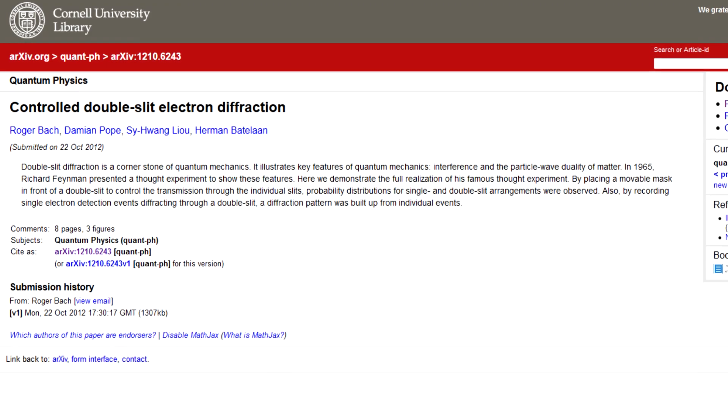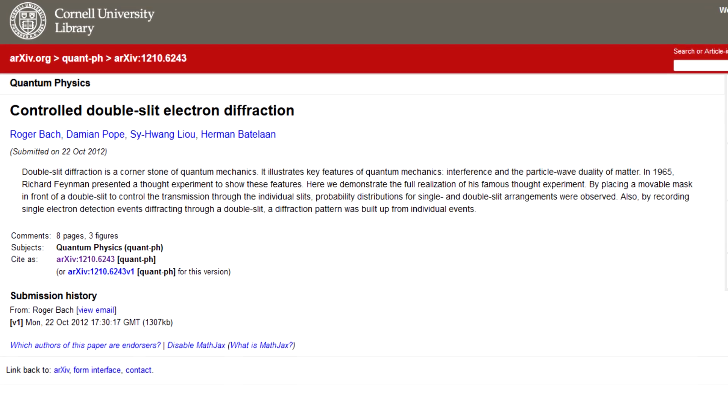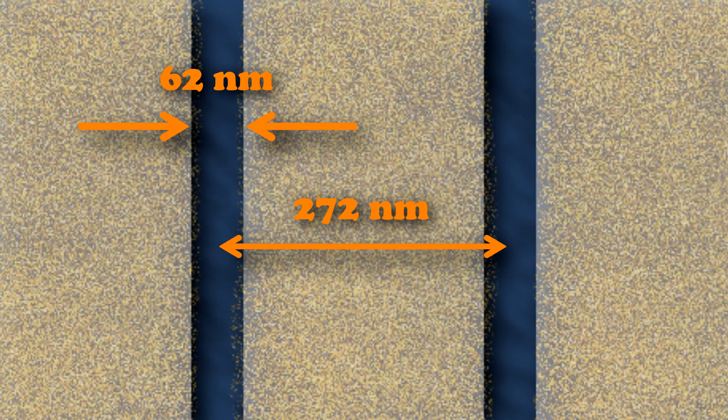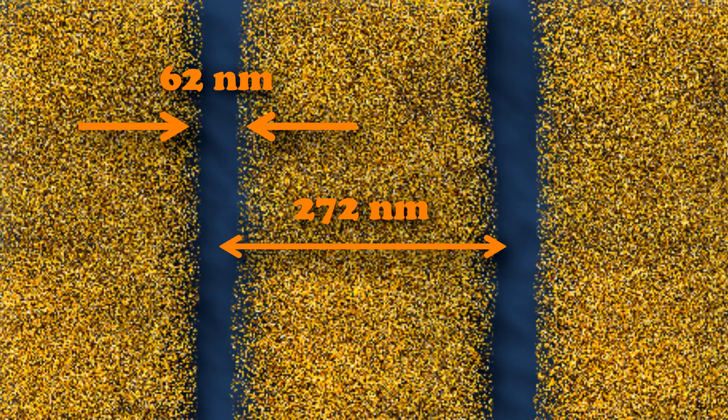Both these facts make this experiment incredibly impractical. That being said, in 2012, a physics team finally managed to actually do it. Their slits were 62 nanometers wide and were separated by 272 nanometers. Just to give you an idea how small that is, it looked more like this. Those bumps are atoms.